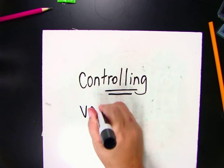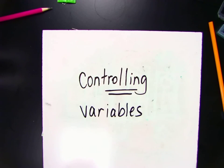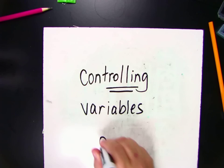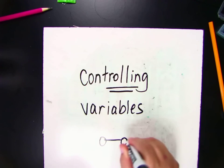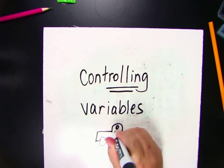And variables are all of the things that you control. So for example, if you're driving in your car, one of the variables that you want to control is maybe the fact that you have your seatbelt on.